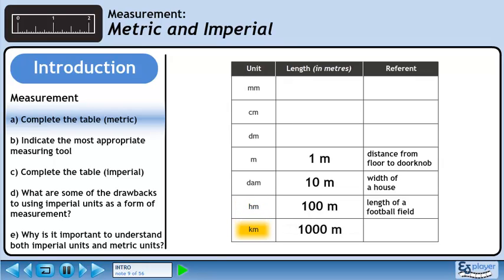The biggest unit we commonly work with is the kilometer. It is 1000 meters long. A kilometer is about the distance you can walk in 15 minutes.